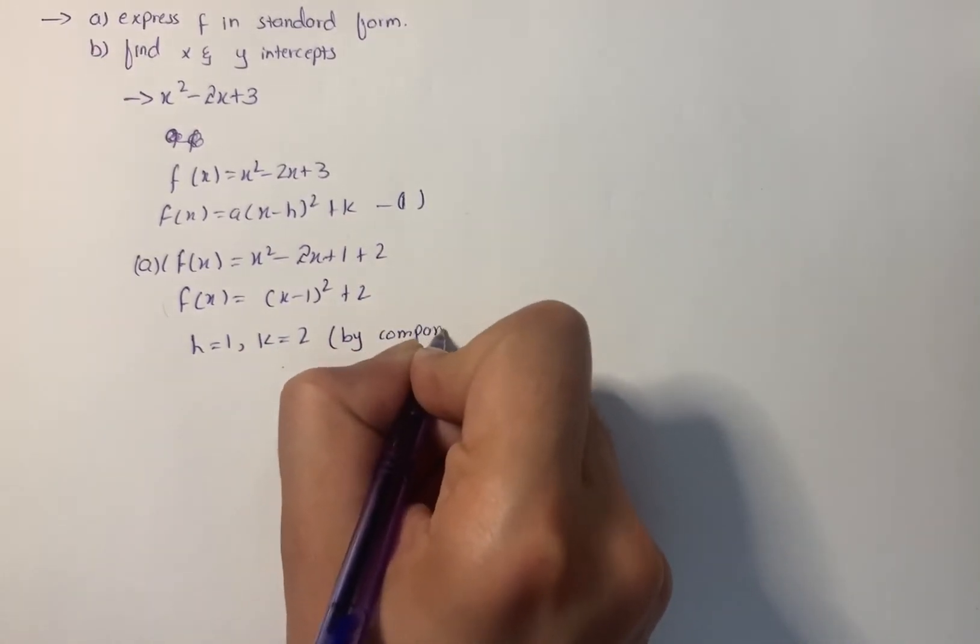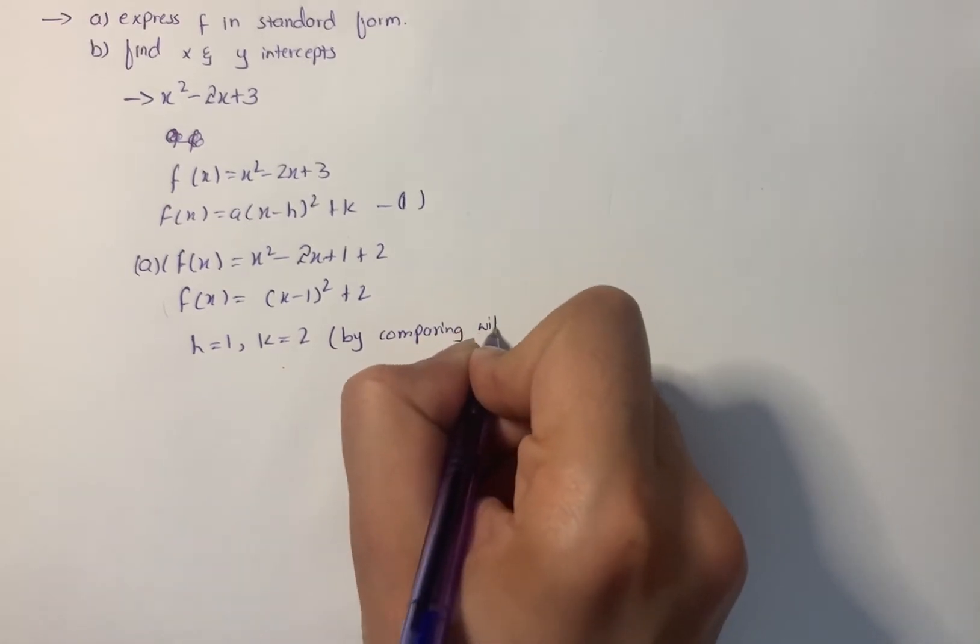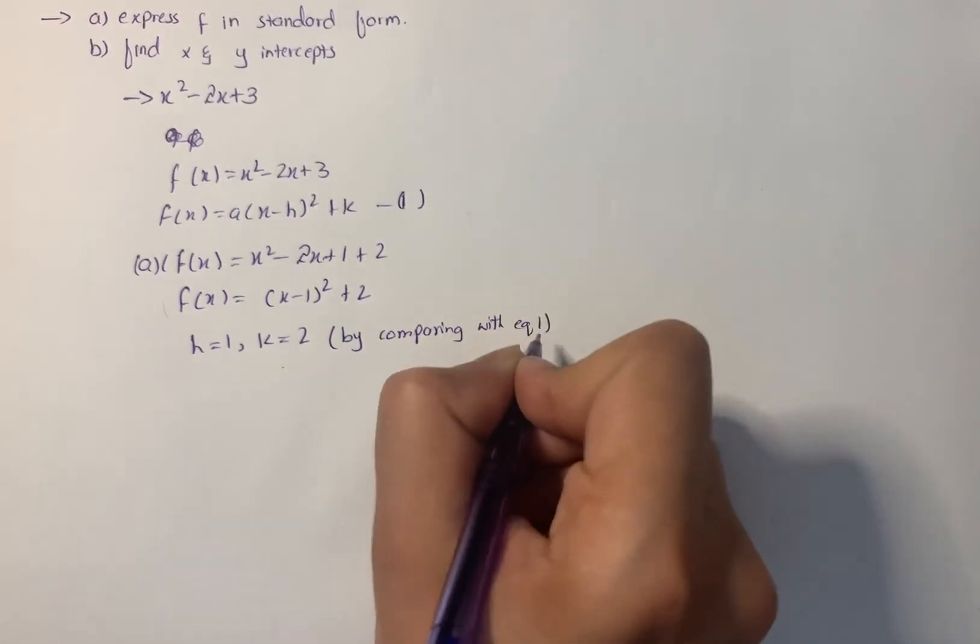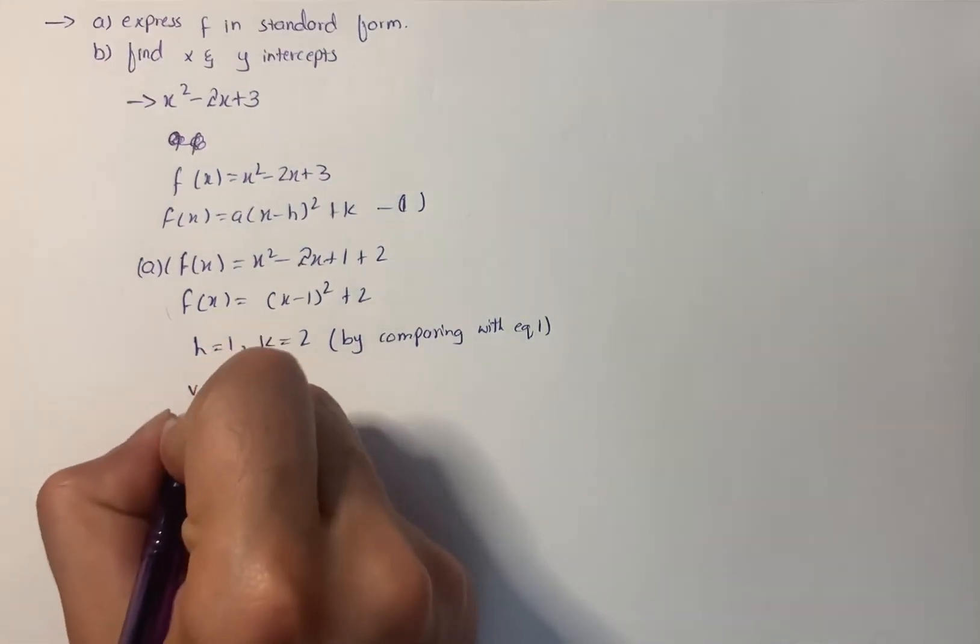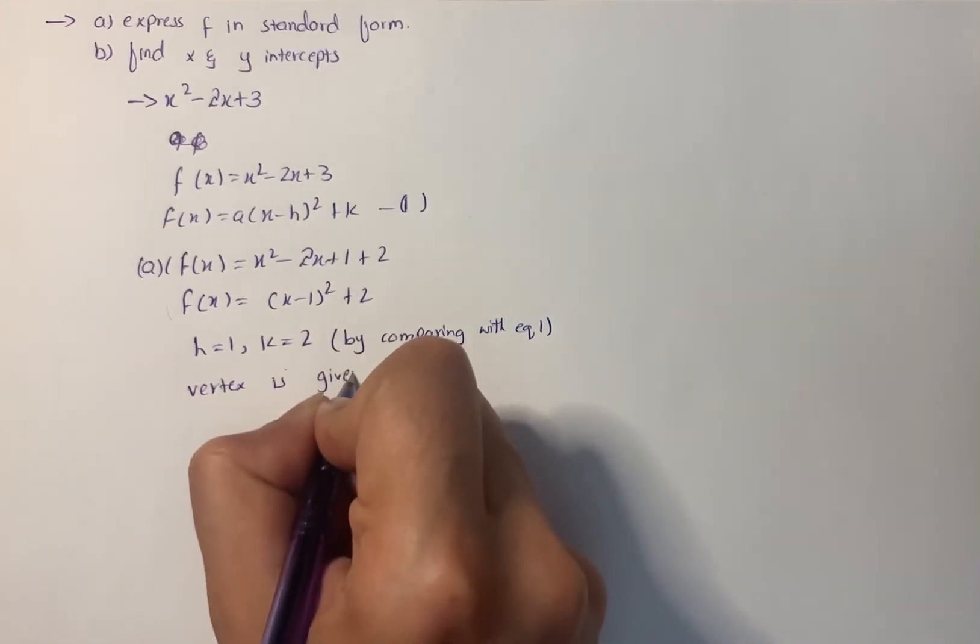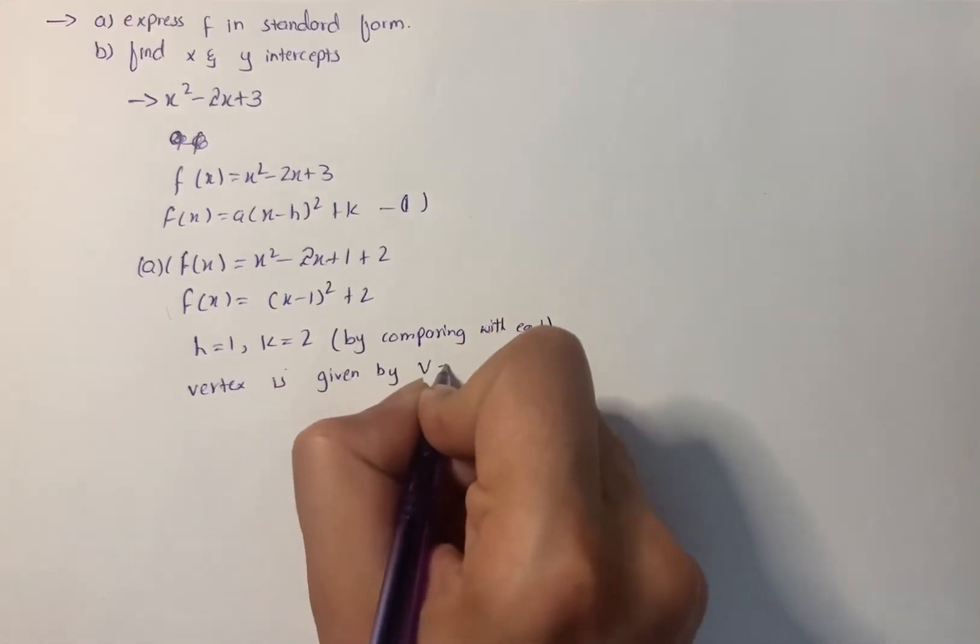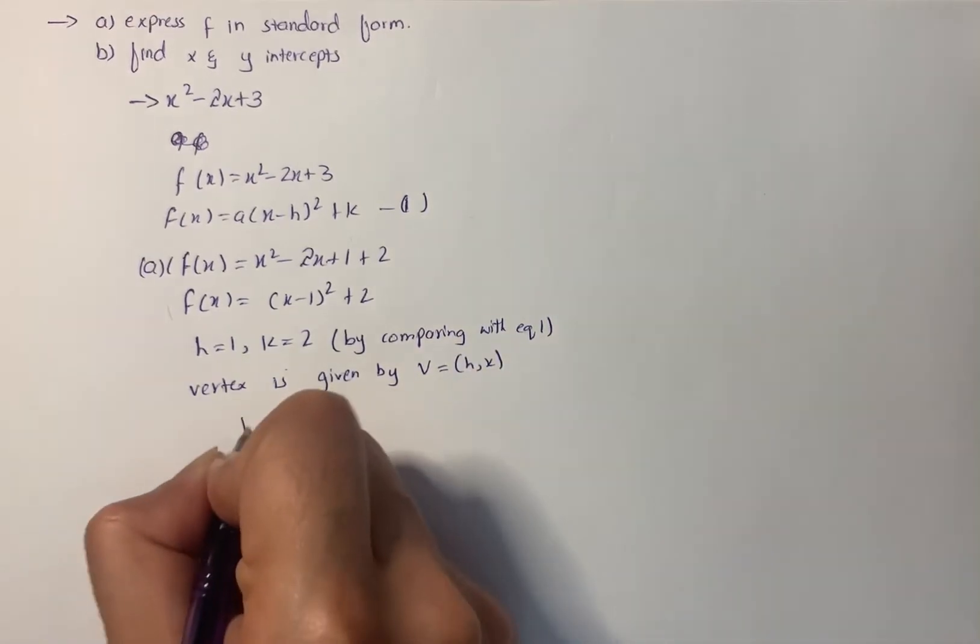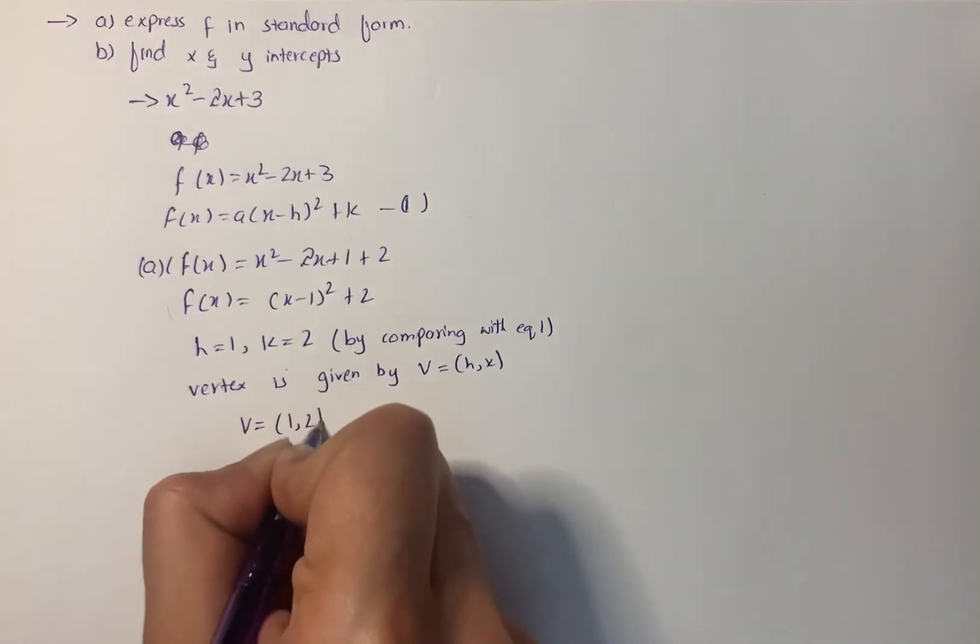By comparing with equation 1, the vertex V is given by V = (h, k), so we have V = (1, 2).